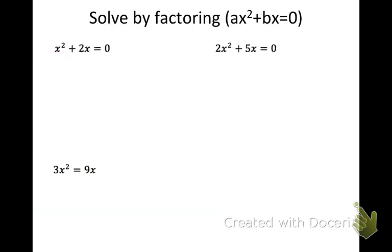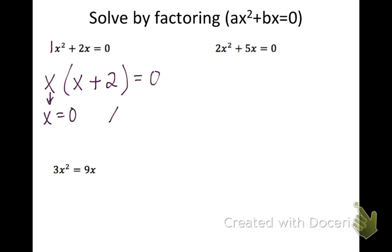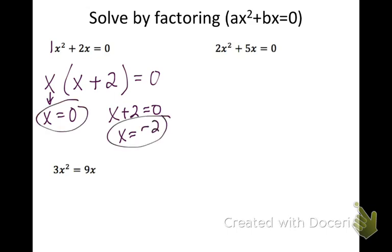Next we're going to factor when we're missing the c term — only a term with x squared and a term with x. We're going to pull GCFs out. For this first one, the coefficients are one and two — there's no GCF there — but I do have a common factor of x, so I pull an x out of both. Pulling one x out of x squared leaves x, and pulling x out of two x leaves two. Setting the first x equal to zero and x plus two equal to zero, I get x equals zero and x equals negative two.